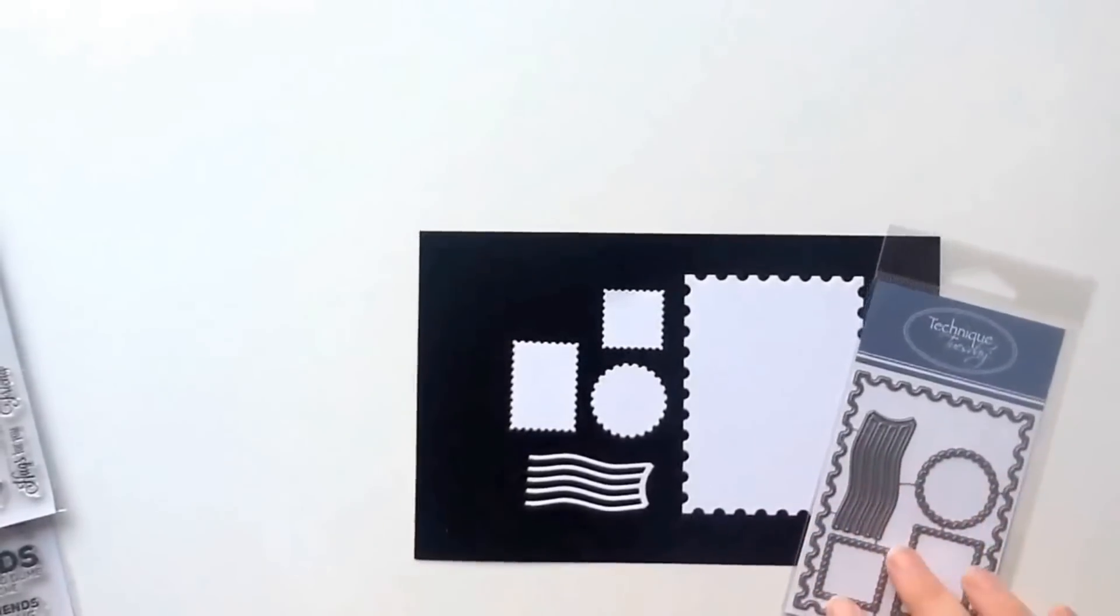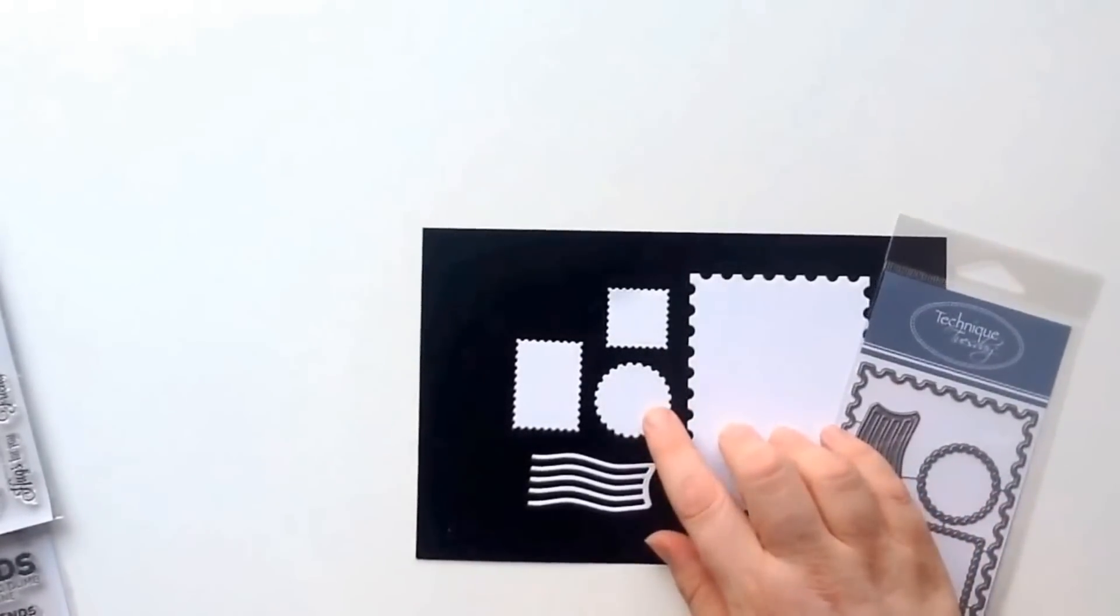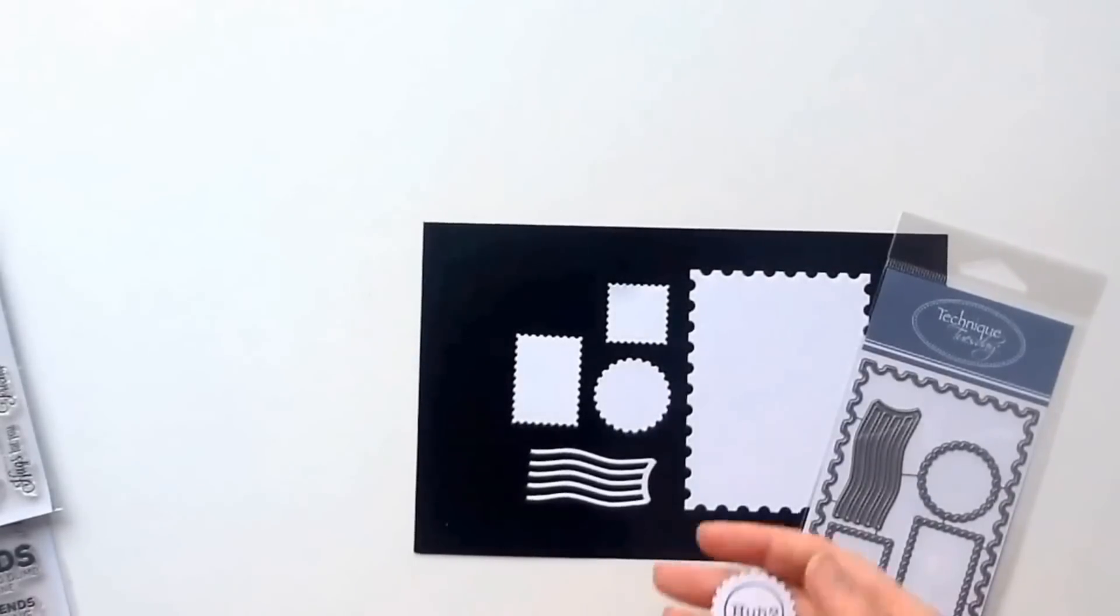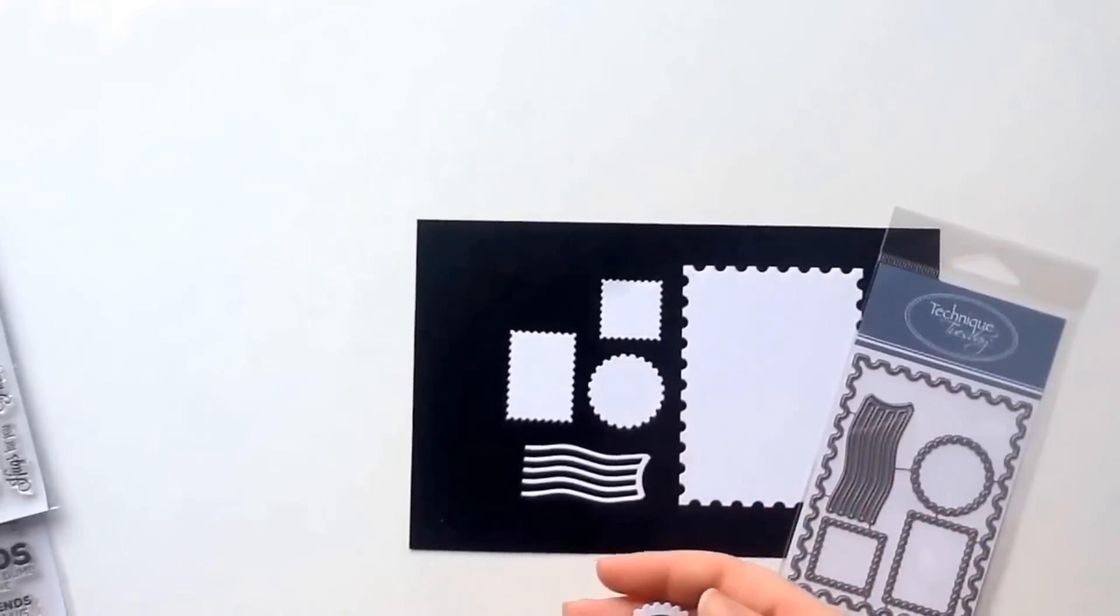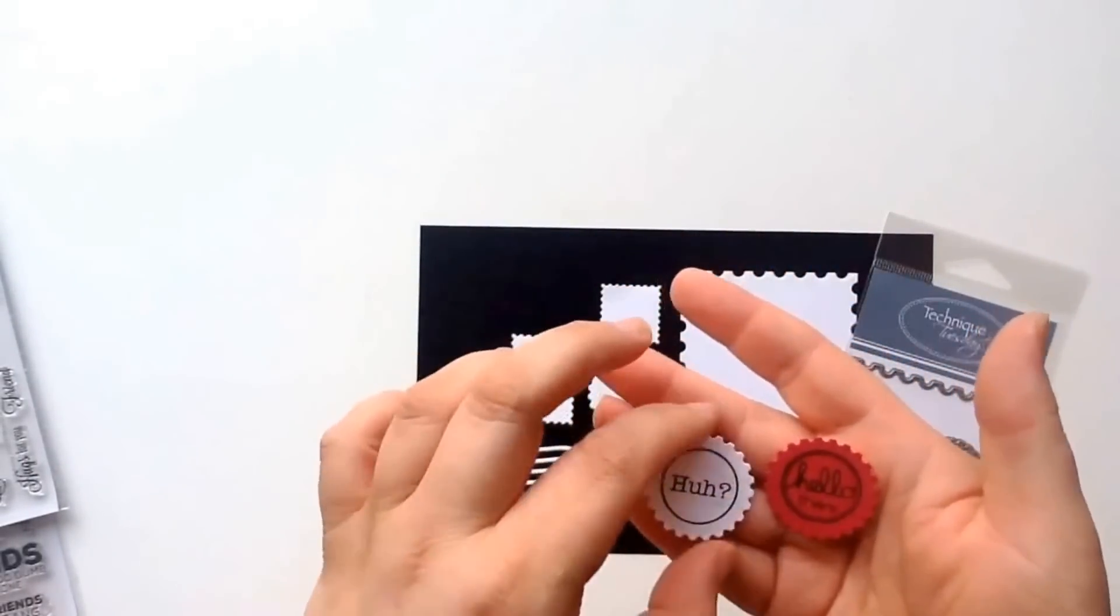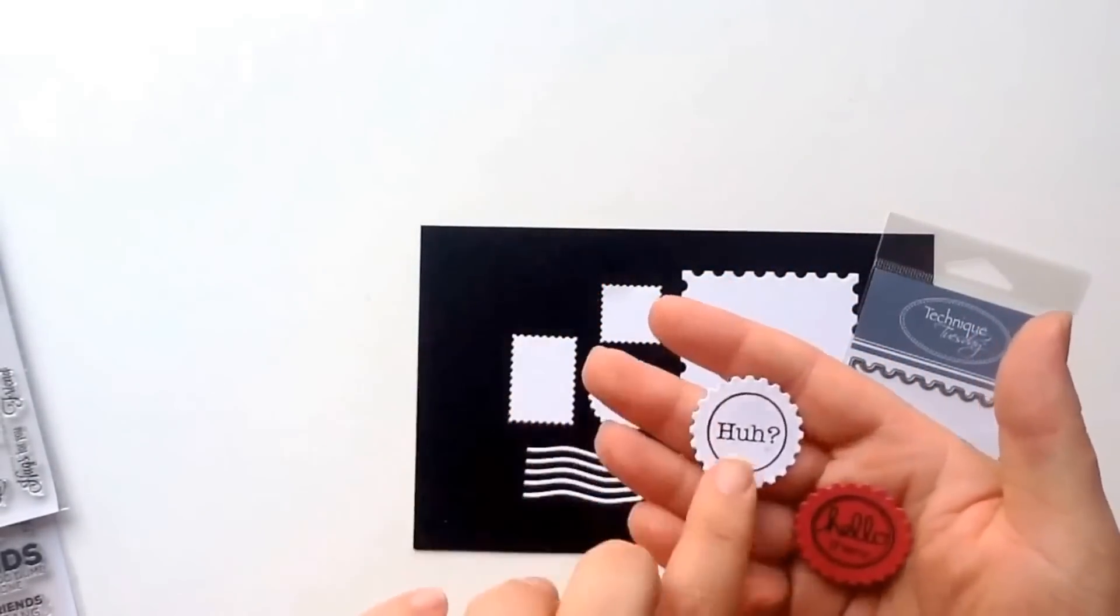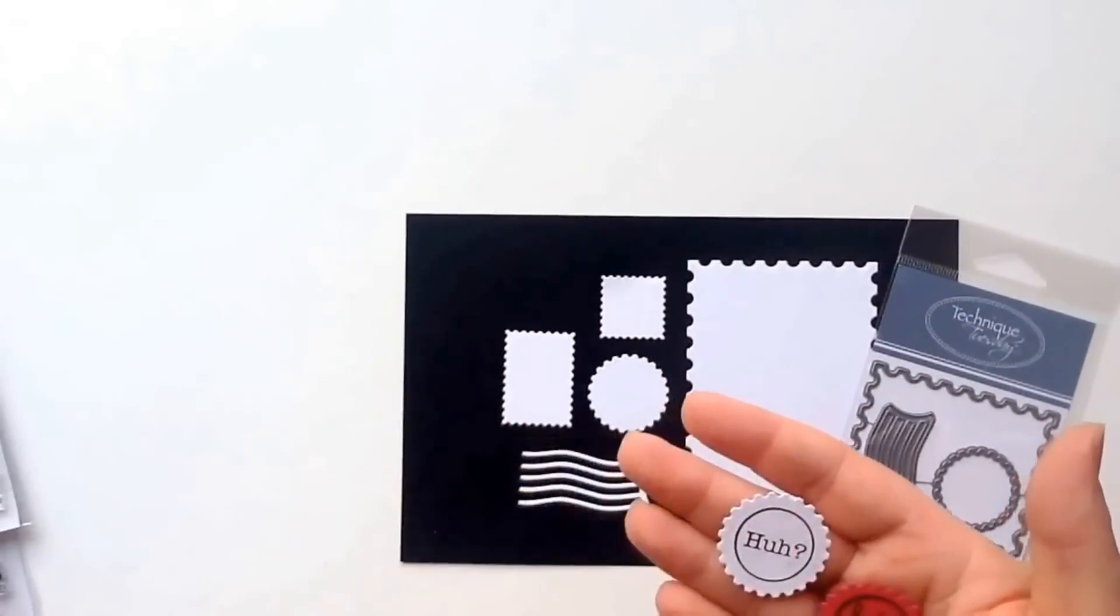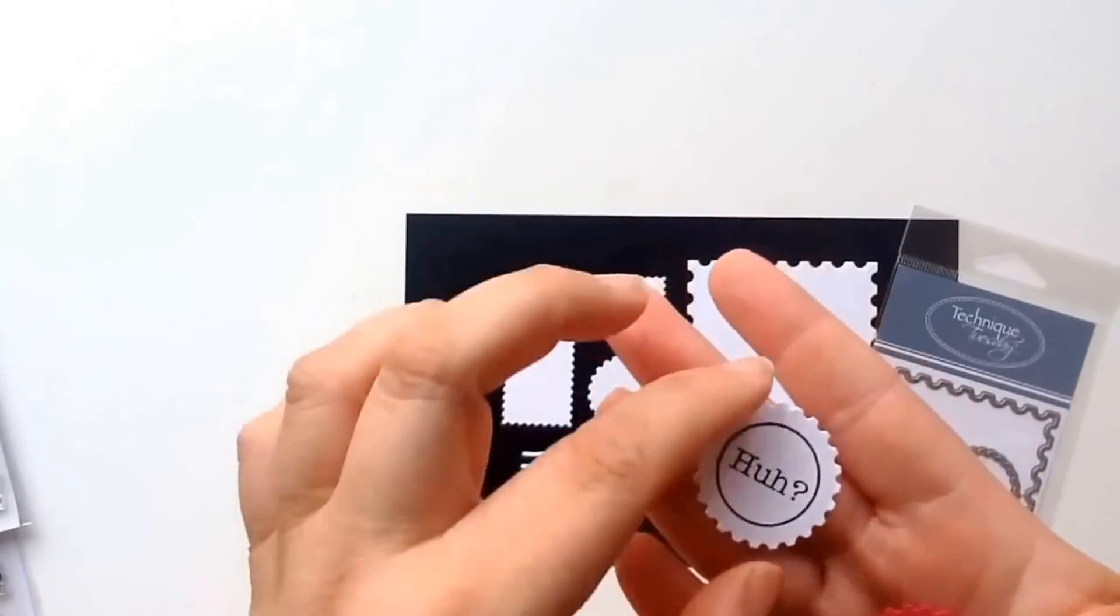Something else that's really great is this little circle here. If you are familiar with Technique Tuesday's flare style stamp sets, you'll be happy to know that many of those circles can be stamped right on top. Those stamps all work with a one inch circle punch, so any of those flare stamp sets from Technique Tuesday.